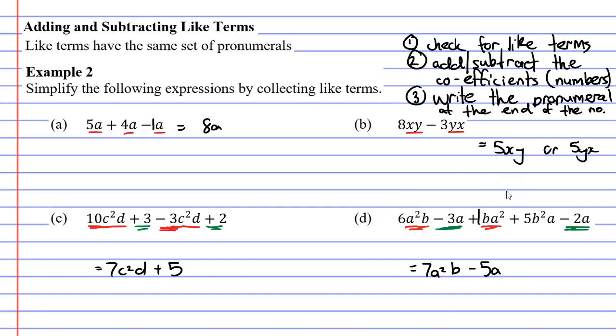Now we have one more term that we haven't looked at yet. It does not share any other like terms here. So what do we do in this scenario? Well we can't add it to anything. We can't subtract it to anything. So it just stays the same. It just stays as positive 5b²a. And this is our solution for question d.